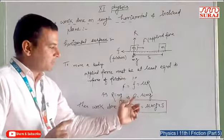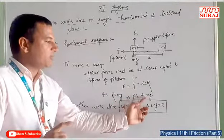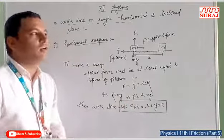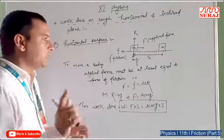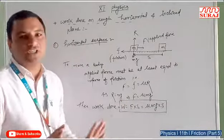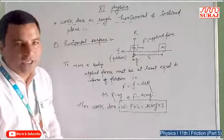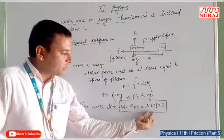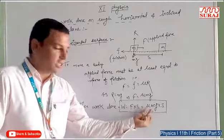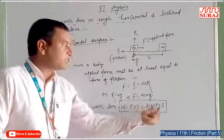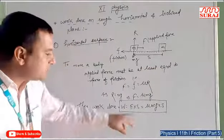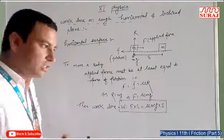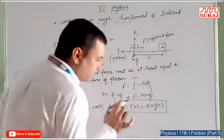Putting in the value of R, the applied force must be equal to μmg. Then the work done on the body is equal to force into distance or displacement. Since force equals μmg and displacement is S, the work done is μmgS. This is the work done on the rough horizontal surface.